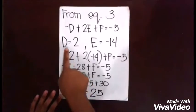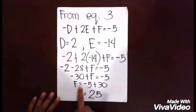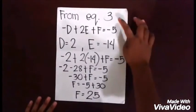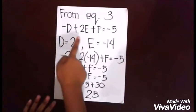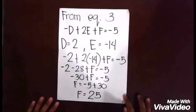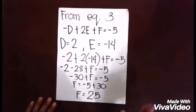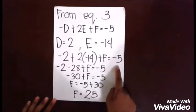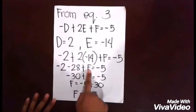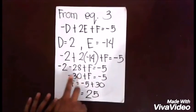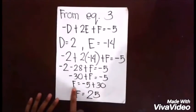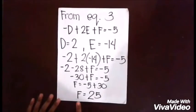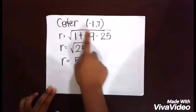Now that you have d and e, solve for f using Equation 3: -d + 2e + f = -5. Substituting: -2 + 2(-14) + f = -5, so -2 - 28 + f = -5, giving -30 + f = -5. Transposing: f = -5 + 30, therefore f = 25.